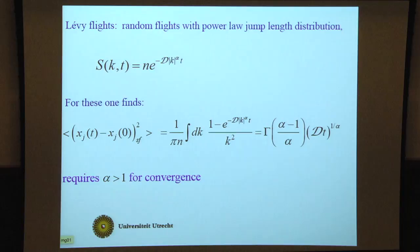You can apply it also to Lévy flights, random flights with a power law jump length distribution. The one particle S(k,t) is e^(-dk^α*t). If you stick that into this expression, you find the mean square displacement of a tagged particle goes as t^(1/α) with a well-defined pre-factor, and it requires α larger than one for convergence.